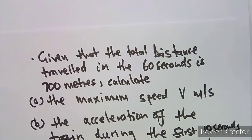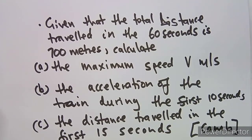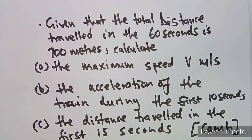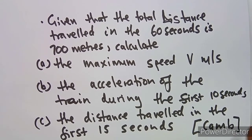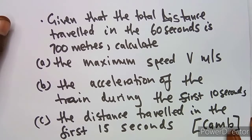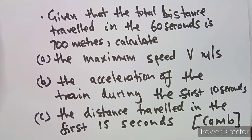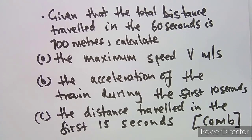These were the questions given: the total distance traveled in 60 seconds is 700 meters — calculate the maximum speed v in meters per second; calculate the acceleration of the train during the first 10 seconds; and calculate the distance traveled in the first 15 seconds.